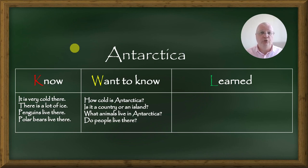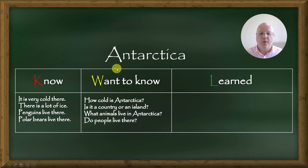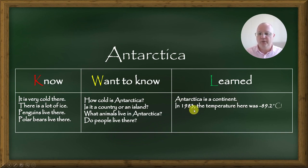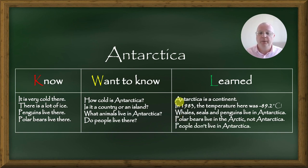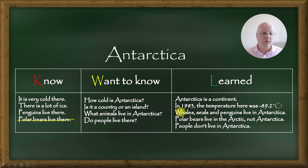At the end of the lesson, ask your students what they learned about the topic and make a list in the third column under learned. Make sure they refer to the second column — pretty much what you're going to get is the answers to those questions. Your students may say: Antarctica is a continent; in 1983 the temperature was 89.2 degrees below zero; whales, seals, and penguins live in Antarctica; polar bears live in the Arctic, not Antarctica; and people don't live in Antarctica. Now it's a good time to remove the incorrect information from the know column so they can see where they made mistakes.